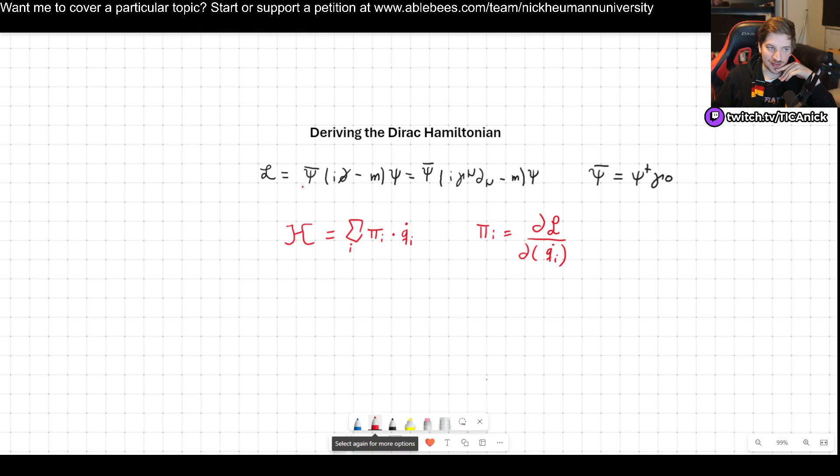I wrote it down in two different ways, one using Feynman slash notation and one not using it. Whenever you have something slash, it simply means gamma mu multiplying that thing. And keep in mind, psi bar is simply psi dagger gamma zero, it's very important that you know that.